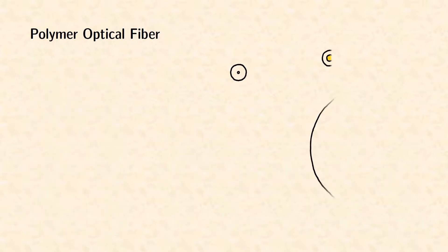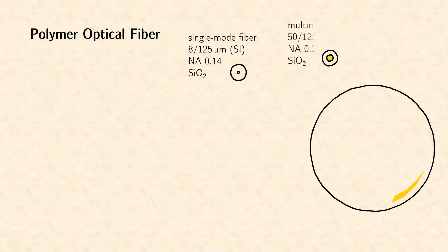The typical cladding diameter of a glass fiber is 125 µm and the core diameter is either 8 µm in case of single mode fibers or 50 µm in case of multimode fibers. In contrast, the cladding diameter of the standard polymer optical fiber is 1000 µm with a core diameter of 980 µm.